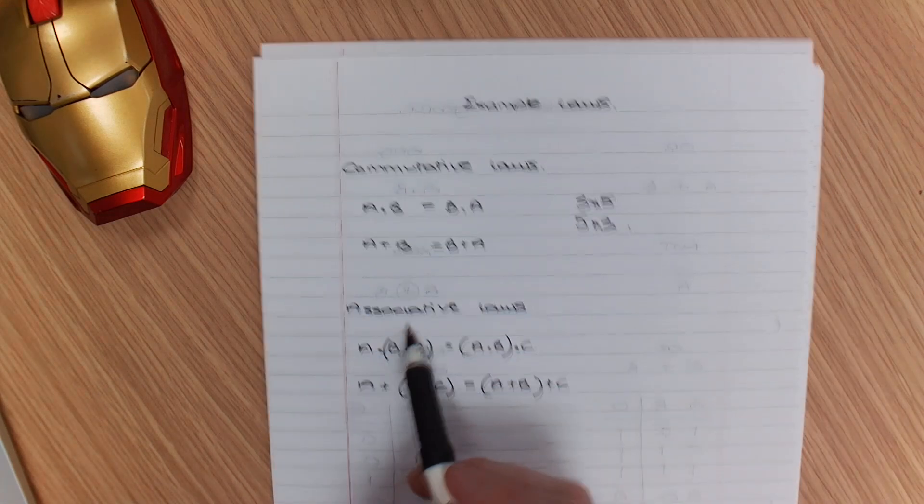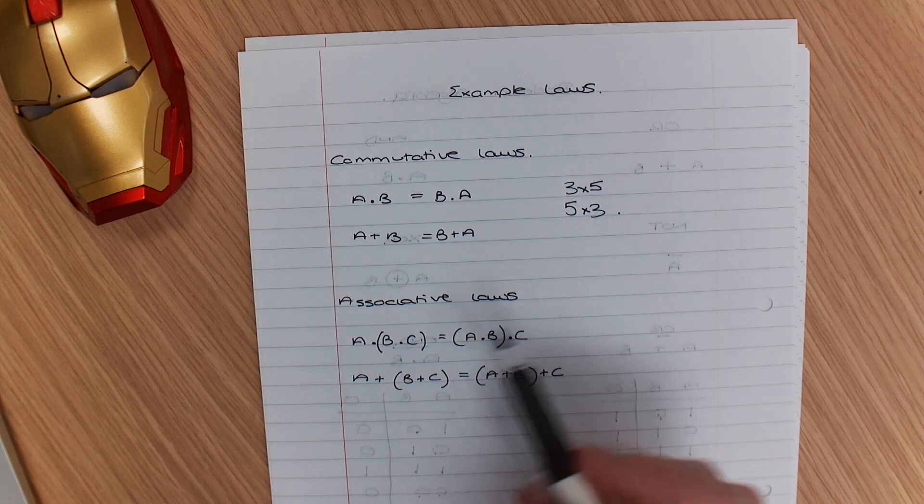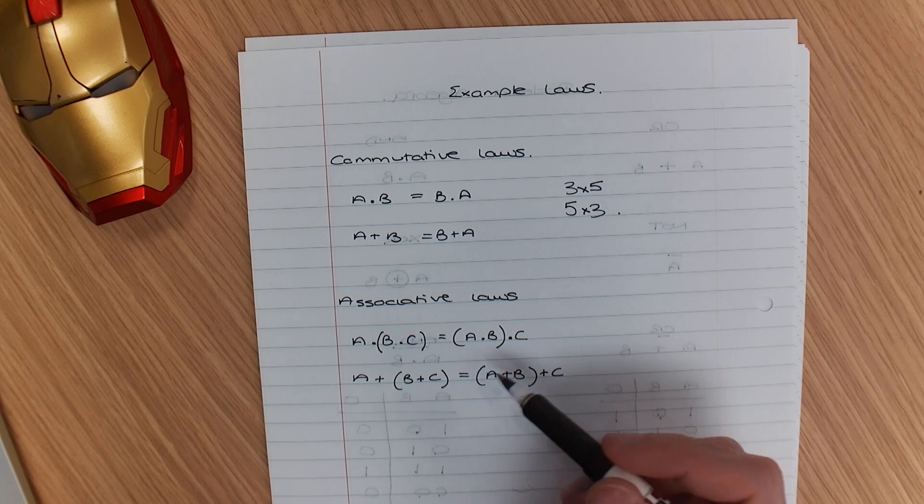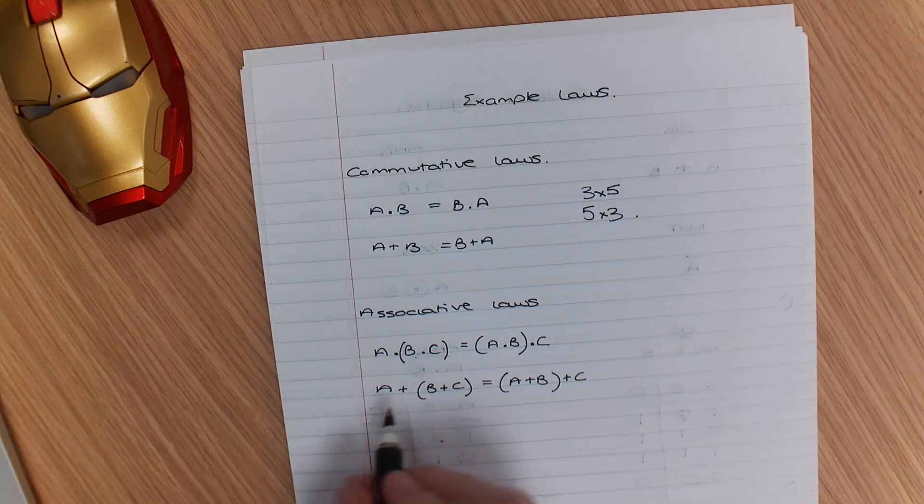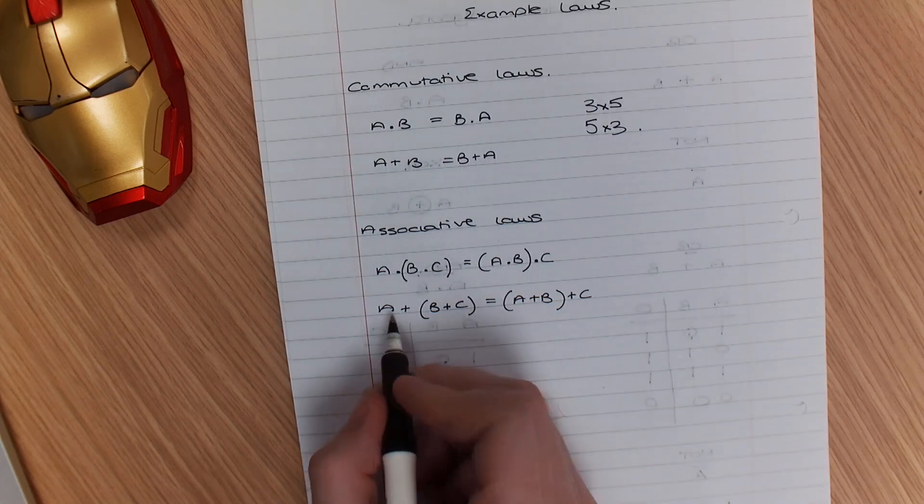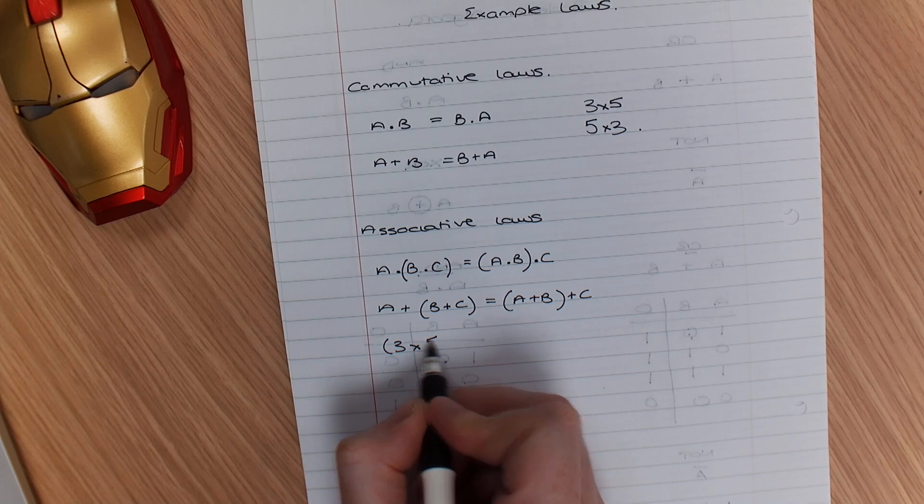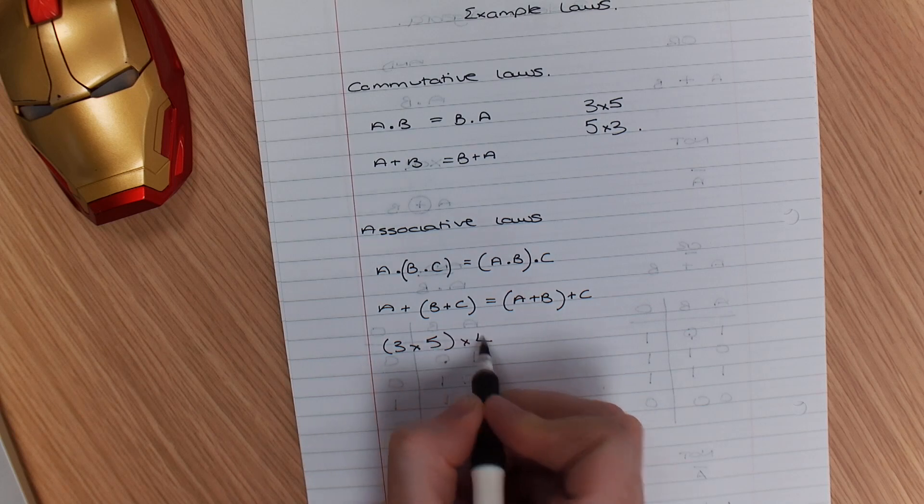Then you've got the associative laws. This law states that when operators are the same, the order they are applied in doesn't matter. For example, if I have 3 times 5 times 4...